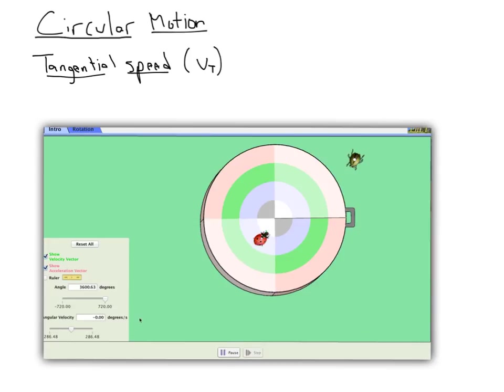The tangential velocity is the speed at which this bug is moving in a straight line. So if I pause the video, we see as the bug goes around the circle, at this point in time, her speed tangent to the circle is in this direction.